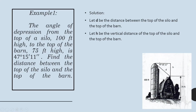As you can see, we created a triangle here. The first thing we're going to do is solve for the value of H. To do that, we just subtract 75 feet from 100 feet. So the value of H is 25 feet.